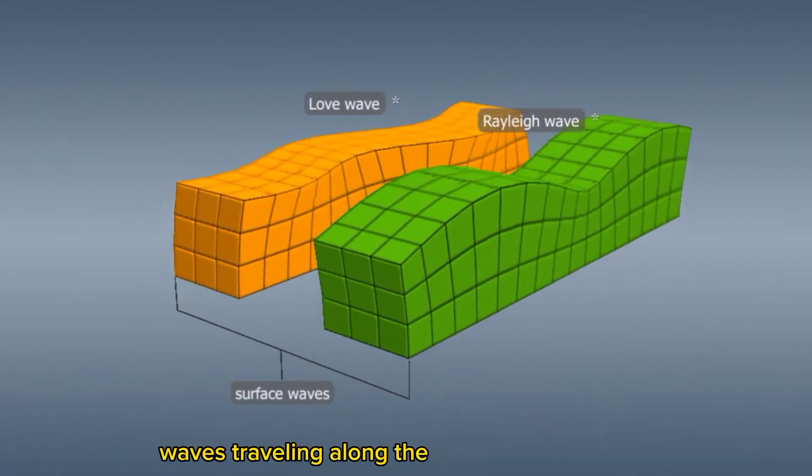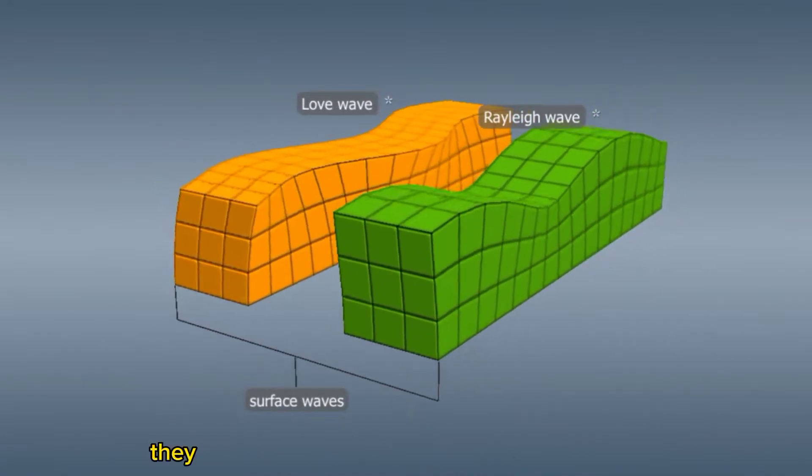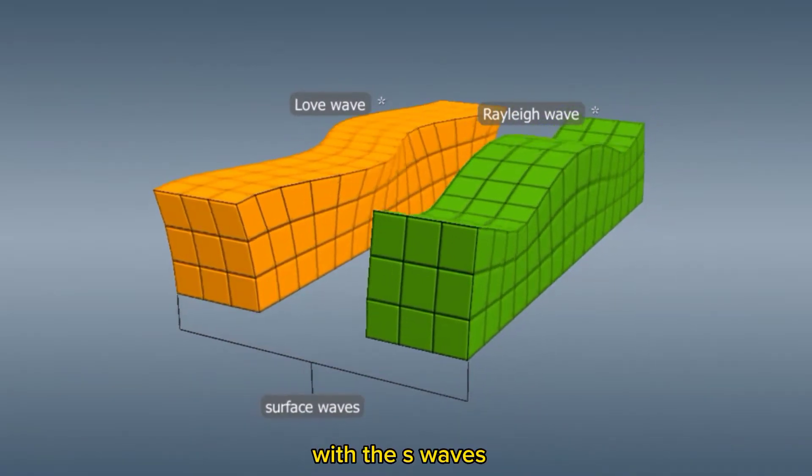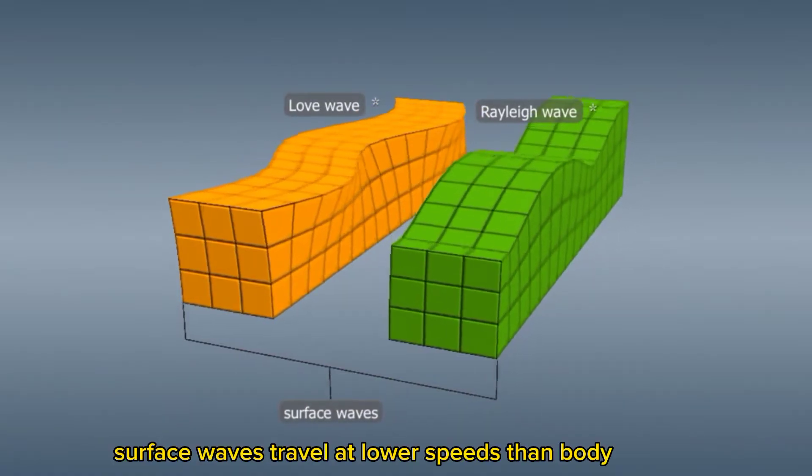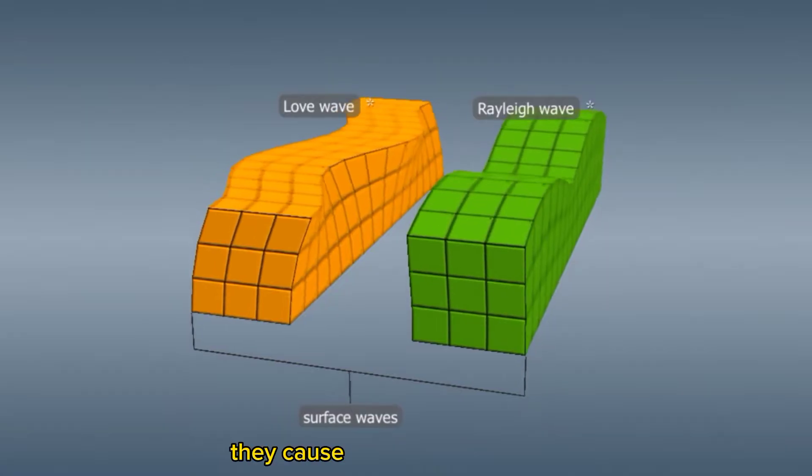Waves traveling along the surface of the Earth are called surface waves. They result from the interference of the P waves with the S waves. Surface waves travel at lower speeds than body waves, but their amplitude is greater. They cause the greatest damage.